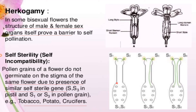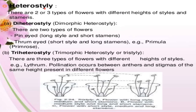Self-sterility or self-incompatibility is where pollen grains of a flower do not germinate on the stigma of the same flower due to the presence of similar self-sterile genes — S1 and S3 in pistil, and S1 and S3 in pollen grains. Examples are tobacco, potato, and crucifers. Next is heterostyly, where there are two or three types of flowers with different heights of styles and stamens.